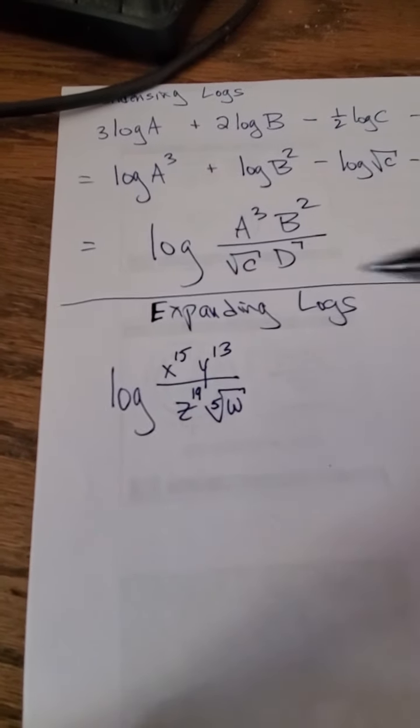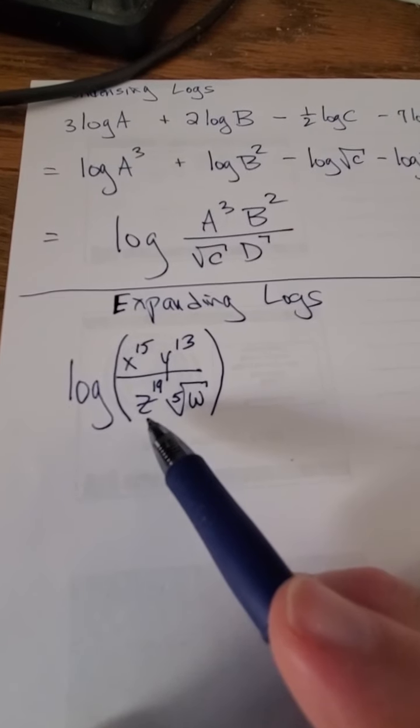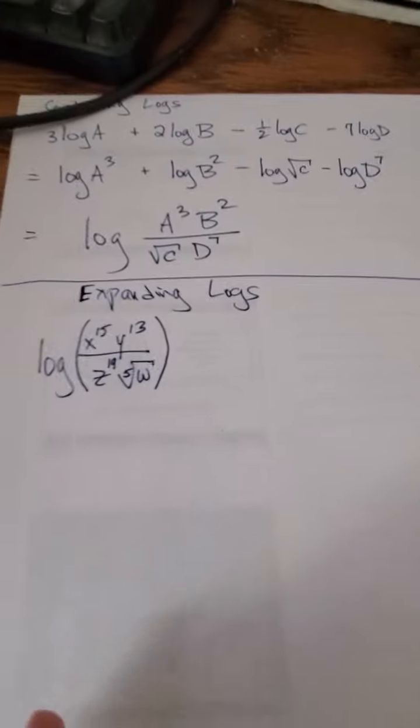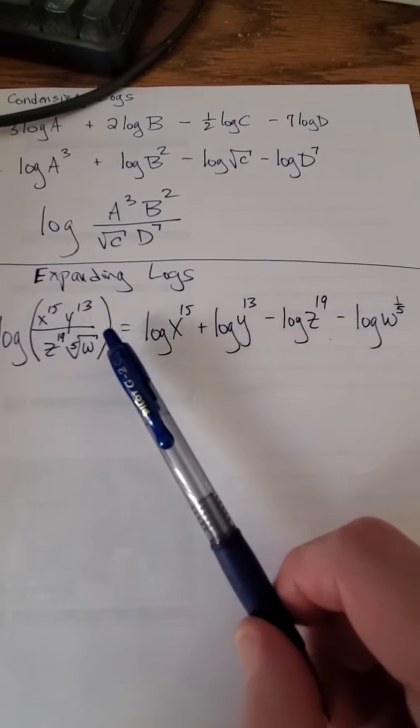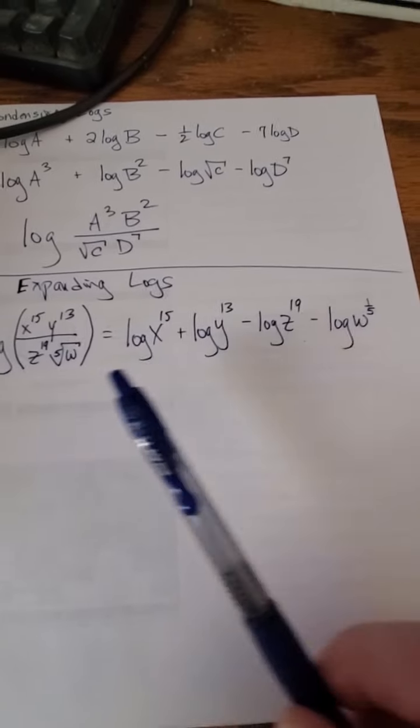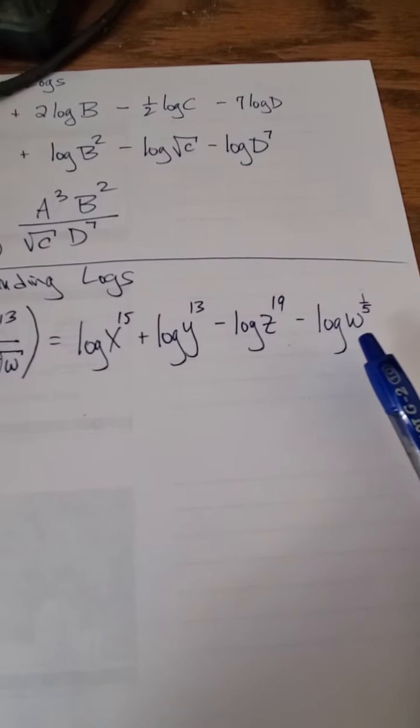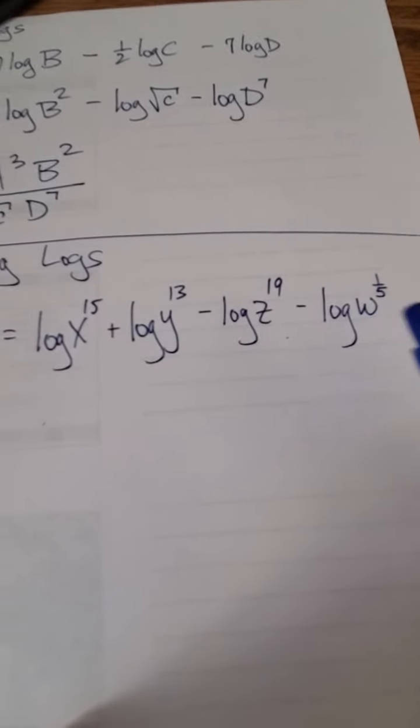So we have the log of this giant quotient: x to the 15th times y to the 13th over z to the 19th times the fifth root of w. Now that's going to be equal to, just by expanding simply, the log of x to the 15th plus the log of y to the 13th minus the log of z to the 19th minus the log of w to the 1/5th. Now where did that 1/5th come from? Because the fifth root of w is the same thing as w to the 1/5th.